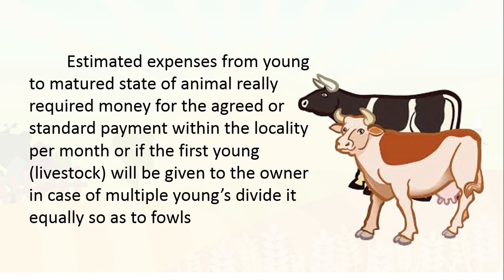Estimated expenses from young to matured state of an animal really require money for the agreed or standard payment within the locality per month. If the first young will be given to the owner in case of multiple young, divide it equally between two farms. Especially in our locality, when you have a herd of animals and one animal gives birth, the first offspring can be given to the owner of the farm as payment for the use of the land. This depends on the agreement between the owner and worker, or on the locality where you work.